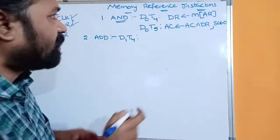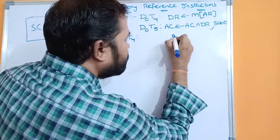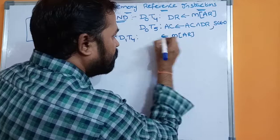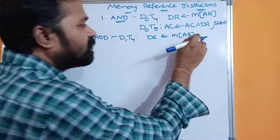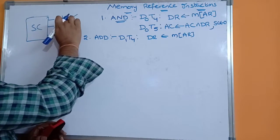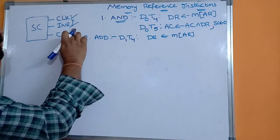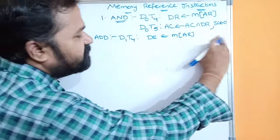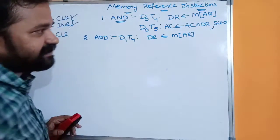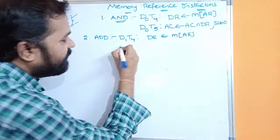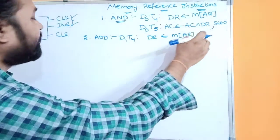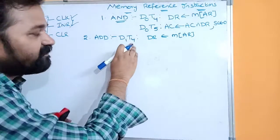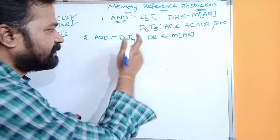First we have to transfer the contents of the memory to the data register. Every time we enable the clock pulse as well as the increment control input — we won't write those two explicitly since they apply in every step. In the next clock pulse, if we apply clock pulse and increment, we get the next timing signal T5.